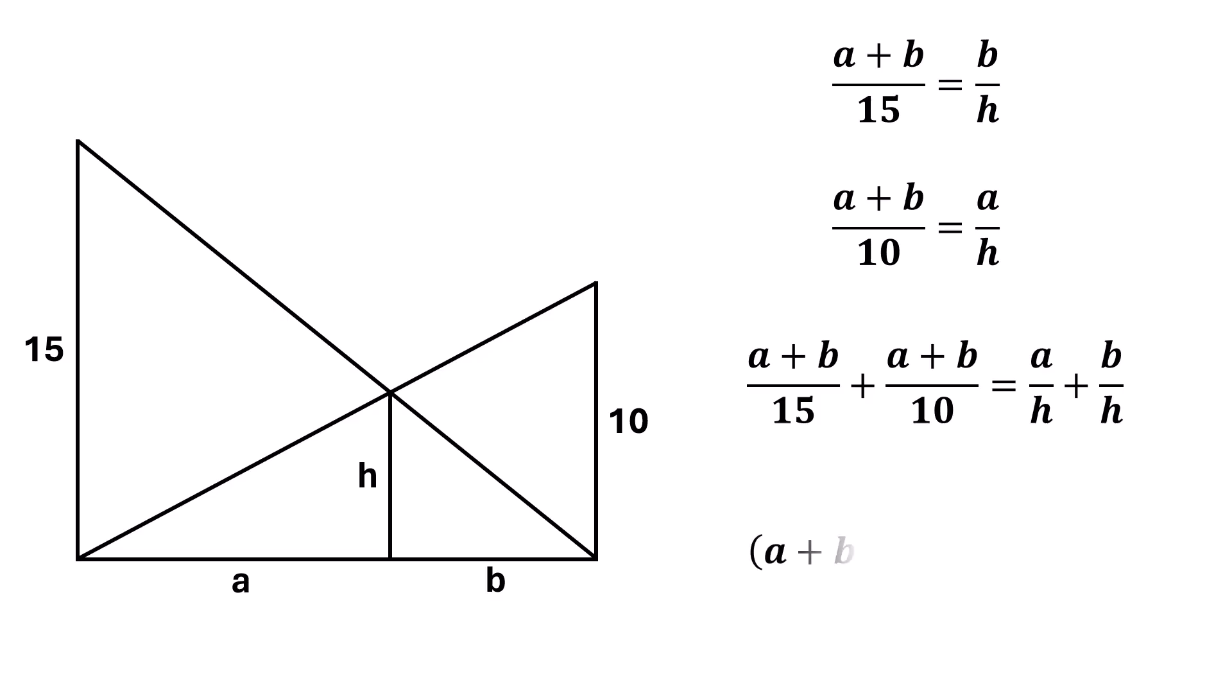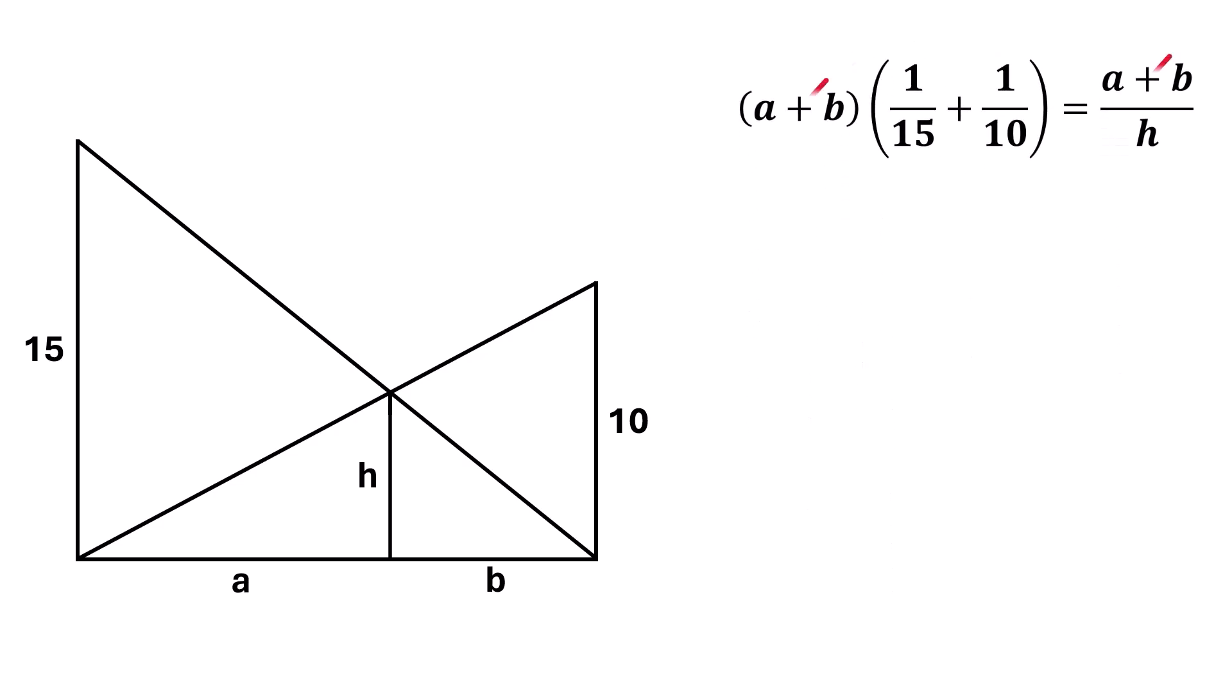we will get A plus B times 1 over 15 plus 1 over 10 is equal to A plus B over H. Now, canceling the A plus B from both sides, we can rewrite our equation as 1 over 15 plus 1 over 10 is equal to 1 over H,